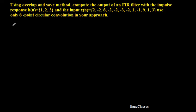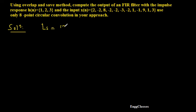So let me consider solving this. First I will write the length of the input sequence, represented as LS, which is equal to the number of samples. Counting: 1, 2, 3, 4, 5, 6, 7, 8, 9, 10, 11, 12. So LS turns out to be 12. The length of the impulse response I represent using the letter M. Counting the samples, there are 3 samples, so M equals 3.